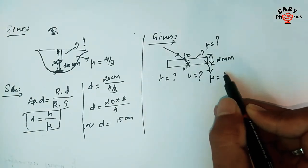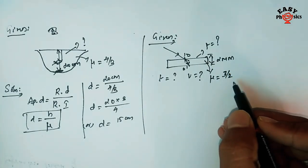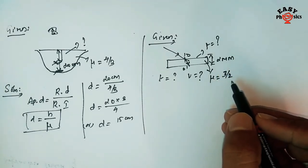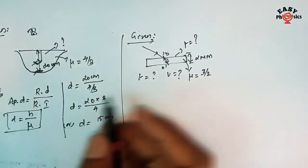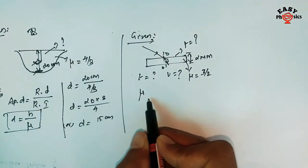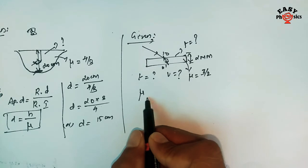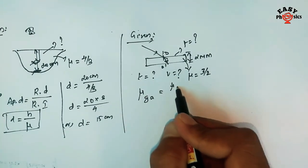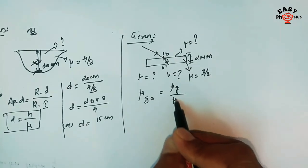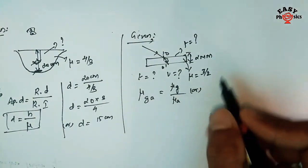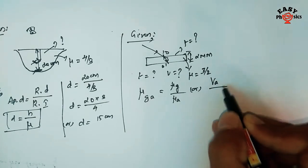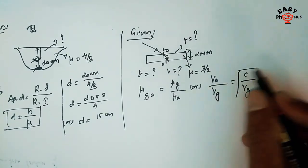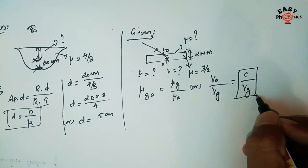The refractive index of glass is 3 by 2. Using the relation for absolute refractive index with respect to air: mu_g divided by mu_a equals v_a divided by v_g, where v_a equals c (speed of light in air) divided by v_g. This is the absolute refractive index relation.